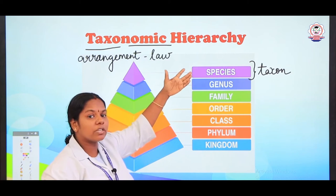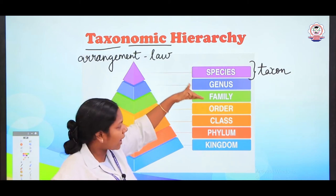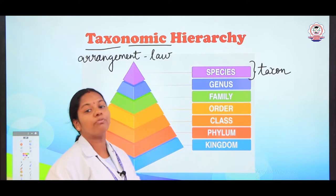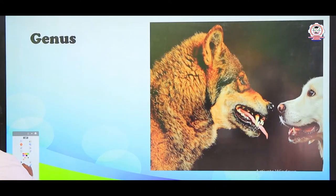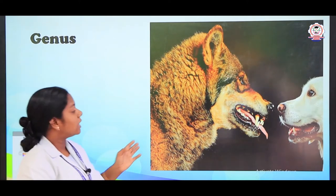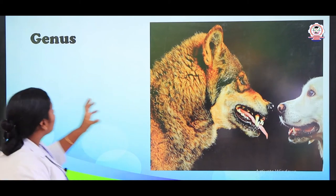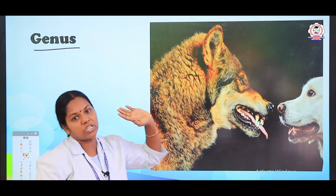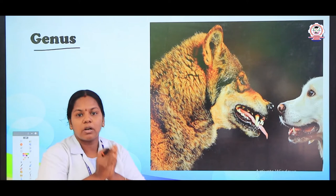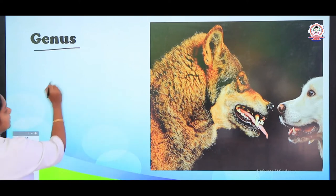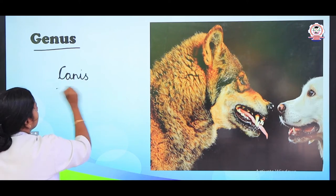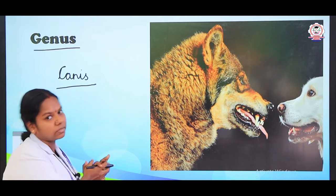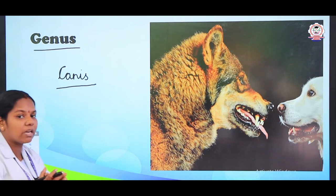Here, species — when compared to species, genus is the next higher level. Then family, order, class, phylum, and kingdom. You should never change this order. This is the hierarchy of classification. What is a genus? The wolf and the dog — wolf belongs to a different species and the dog to a different species, but both species come together under the genus Canis. Canis refers to both the wolf and the dog, but they cannot interbreed among themselves.